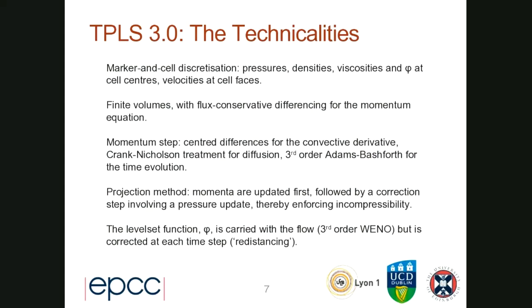A few technicalities: we're using marker-in-cell discretization. Pressure, densities, viscosities, and phi are at the cell centers, and the velocities are located at the cell faces. We're using finite volumes with flux-conservative differencing for the momentum equation. The momentum step uses centered differences for the convective derivative, implicit treatment for diffusion, and third order for the time evolution. Then the momentum is updated first, followed by a correction step involving the pressure update in order to force incompressibility. The level set function is carried along with the flow, with corrections at each time step, which is known as re-distancing.